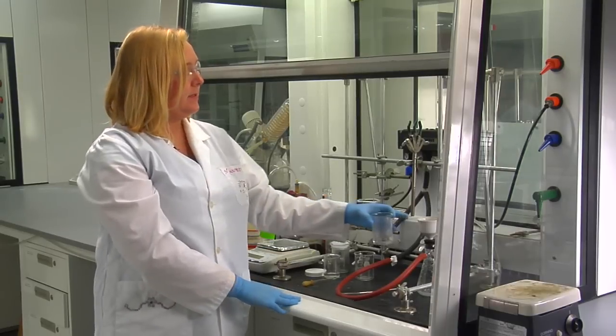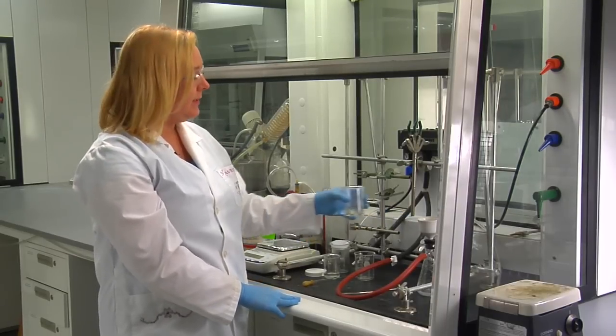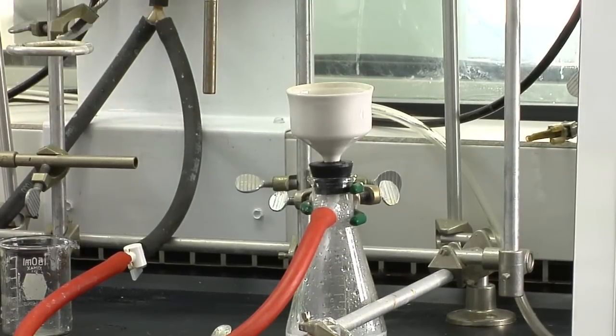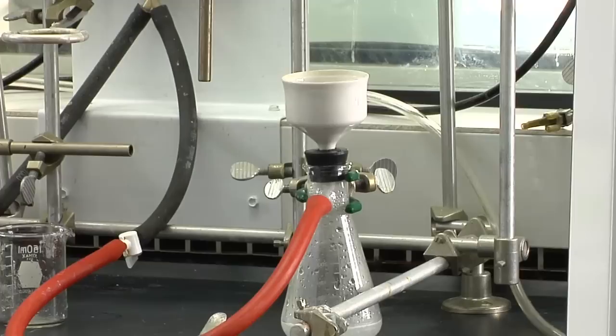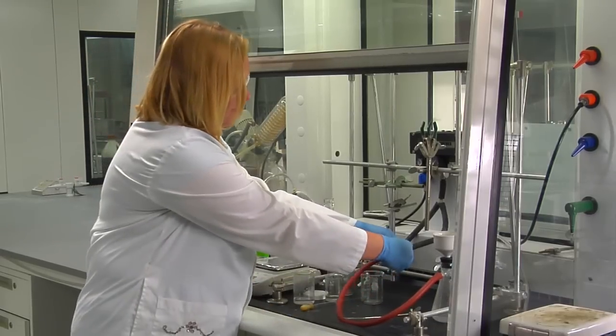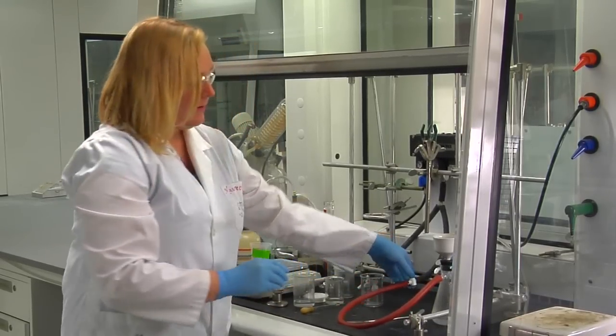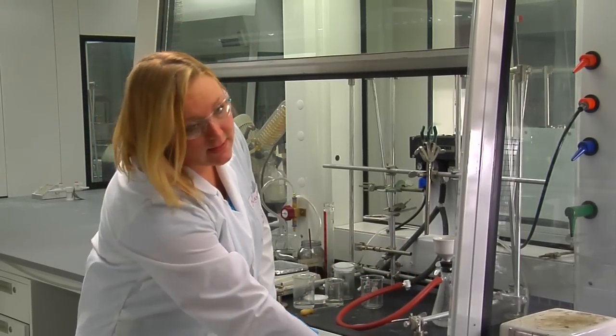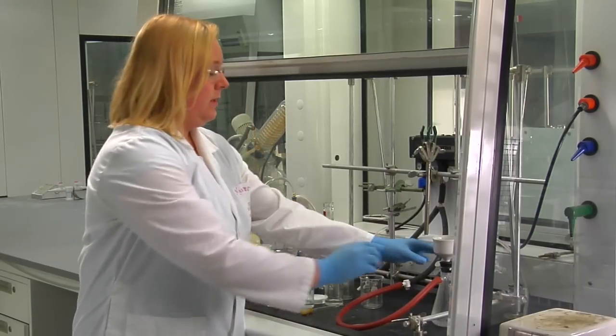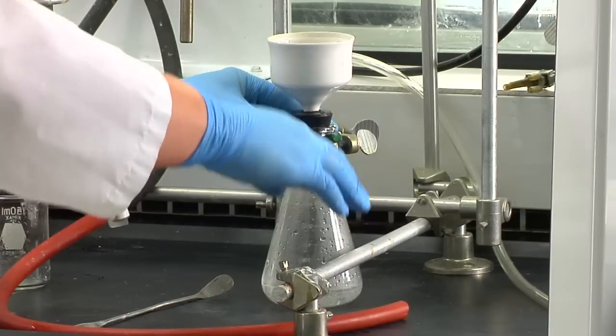Finally, you can rinse your salicylic acid with some cold water. Once it is dried, you can then turn off the vacuum and turn off this knob. Remove the hosing.